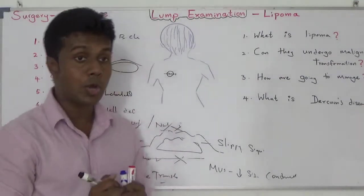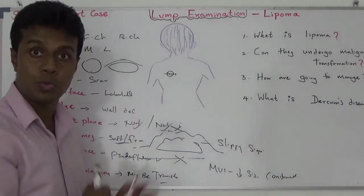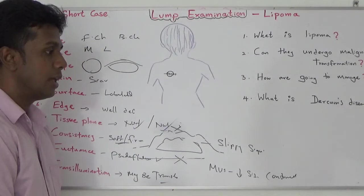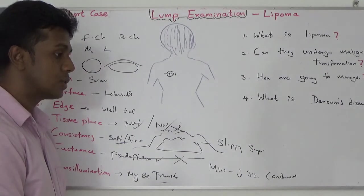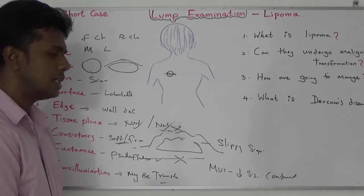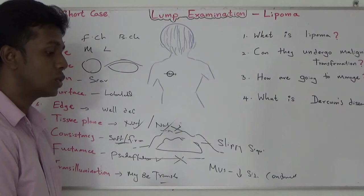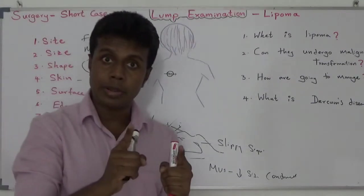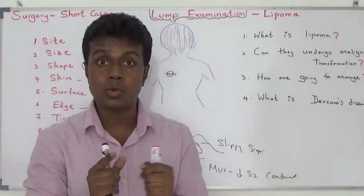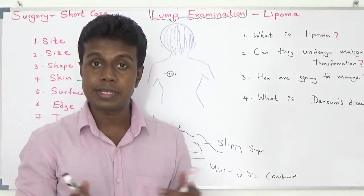How to present: Stand still, don't look to either side, and present like this: 'There is a hemispherical-shaped lump over the left scapula, measuring 3 cm in diameter. Surface lobulated, edges well-defined. It is freely mobile, not attached to skin or underlying structure. Slipping sign is positive. Soft in consistency, pseudofluctuant and transilluminant. My probable diagnosis is lipoma. I would like to offer excision under local anesthesia if it is cosmetically unacceptable or causing pain.'